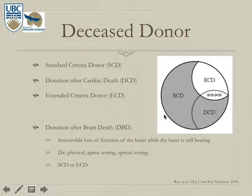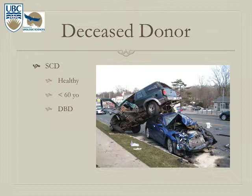To get a diagnosis of brain death, there must be irreversible loss of brain function. Two physicians usually have to conclude that the patient is, in fact, brain dead. From there, the patient can go into either the standard criteria or extended criteria donor category.